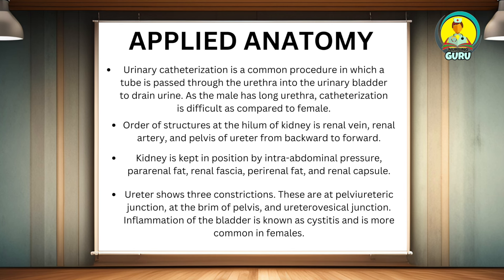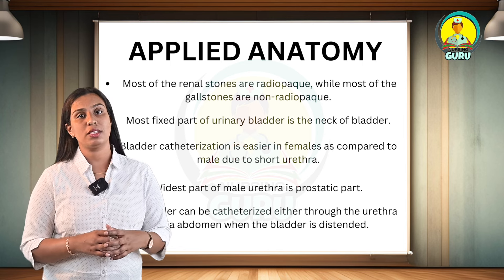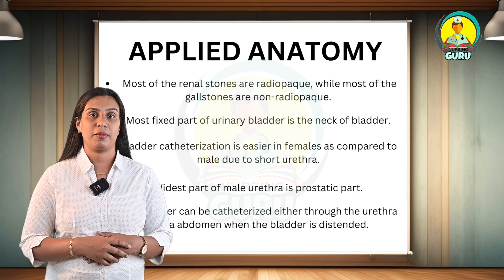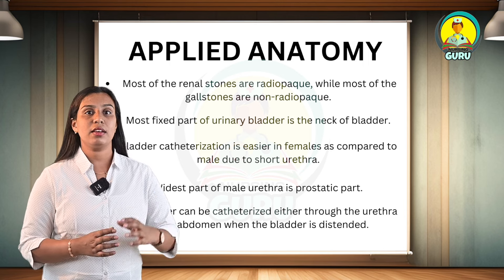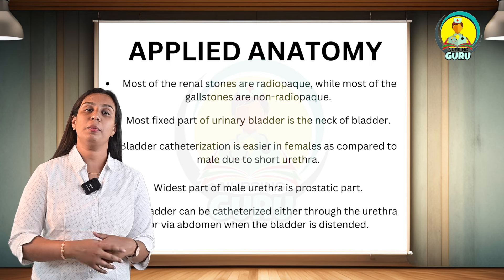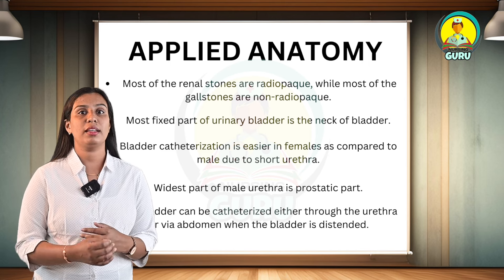The kidney is also supported by the renal fossa, perirenal fat, and renal capsule. The ureter shows three constrictions: at the pelvi-ureteric junction, at the brim of the pelvis, and at the uretero-vesical junction. Inflammation of the bladder is known as cystitis and is more common in females. Most renal stones are radio-opaque, while most gallstones are non-radio-opaque. The most fixed part of the urinary bladder is the neck of the bladder. Bladder catheterization is easier in females due to the shorter urethra. The widest part of the male urethra is the prostatic part. The bladder can be catheterized either through the urethra or via the abdomen when the bladder is distended.